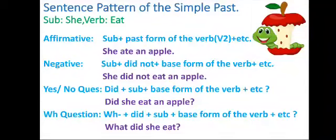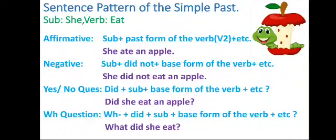The yes/no question is: did plus subject plus the base form of the verb plus etc., and a question mark. So: did, the helping verb, plus subject 'she,' plus base form of the verb 'eat,' plus etc. 'an apple.' The sentence is: did she eat an apple? For the WH question, we use the WH word 'what': what, did, subject 'she,' and base form of the verb 'eat.' What did she eat?